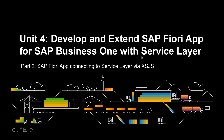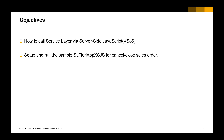Unit 4: Develop and Extend SAP Fiori App for SAP Business One with Service Layer. Part 2: SAP Fiori App connecting to Service Layer via Service Side JavaScript. At the end of this session, you will be able to explain how to call Service Layer with Service Side JavaScript, and how to set up and run the sample Fiori App for canceling and closing sales orders shown in the last session.